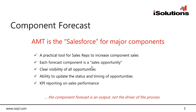For the component forecast, AMT is modeled almost as a sales force for major components — it is designed for the sales reps. Each component that is forecast for a piece of equipment is treated as a sales opportunity, and the sales rep has clear visibility of all of those opportunities. In the mark area, those opportunities were viewed just in the component change-out form — the same functionality, the same base scheduling of components. But the sales rep now has additional fields they can populate.